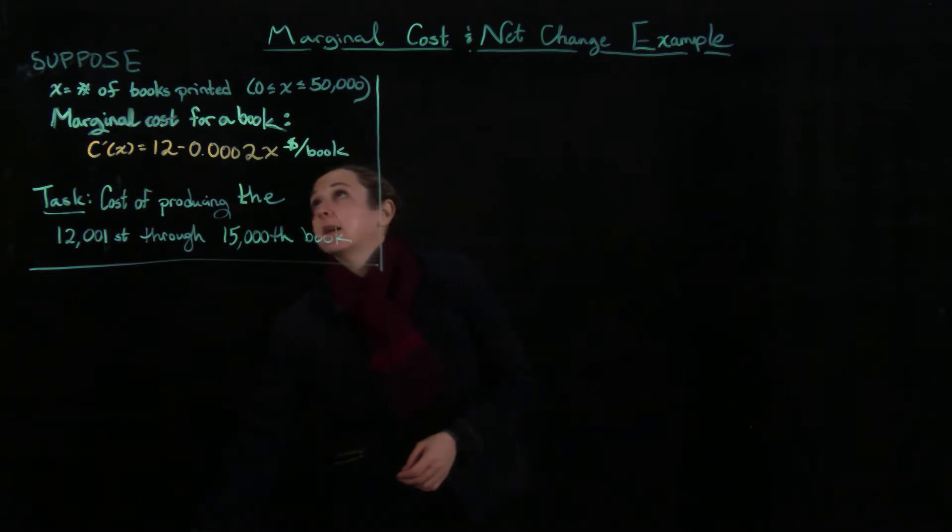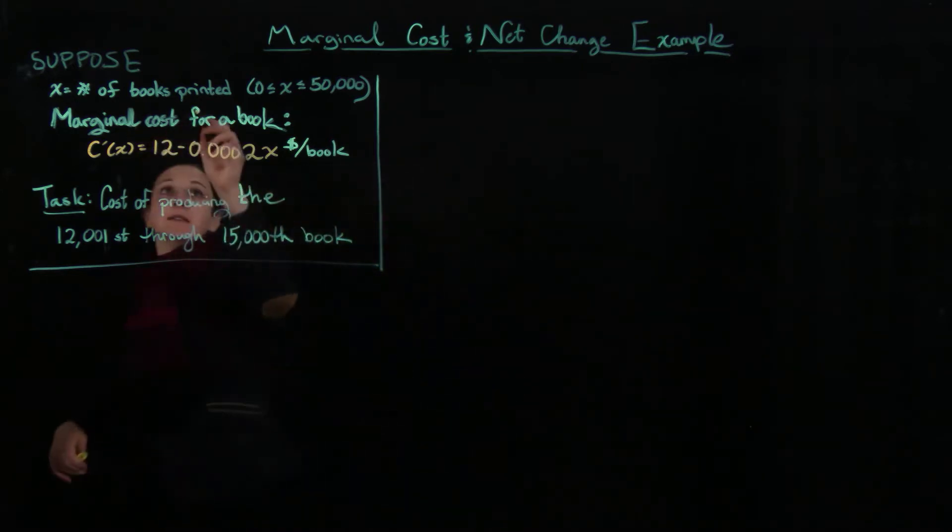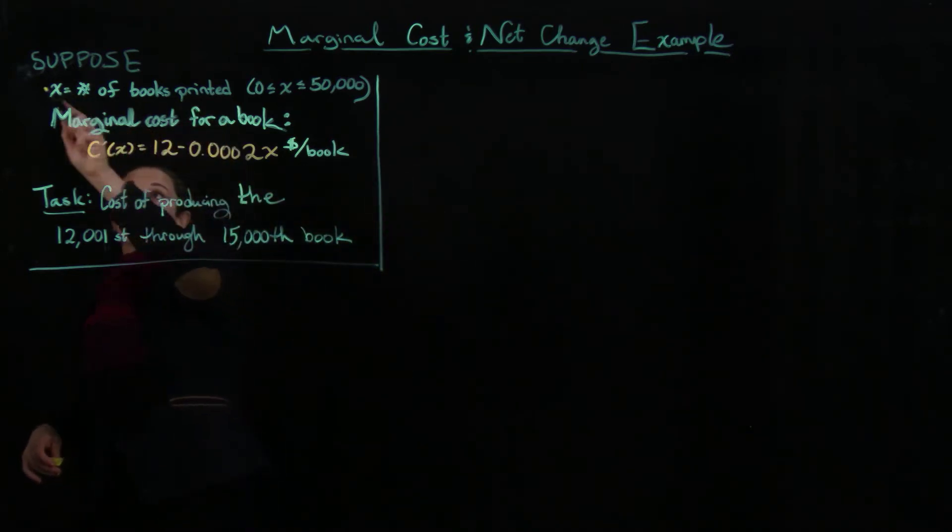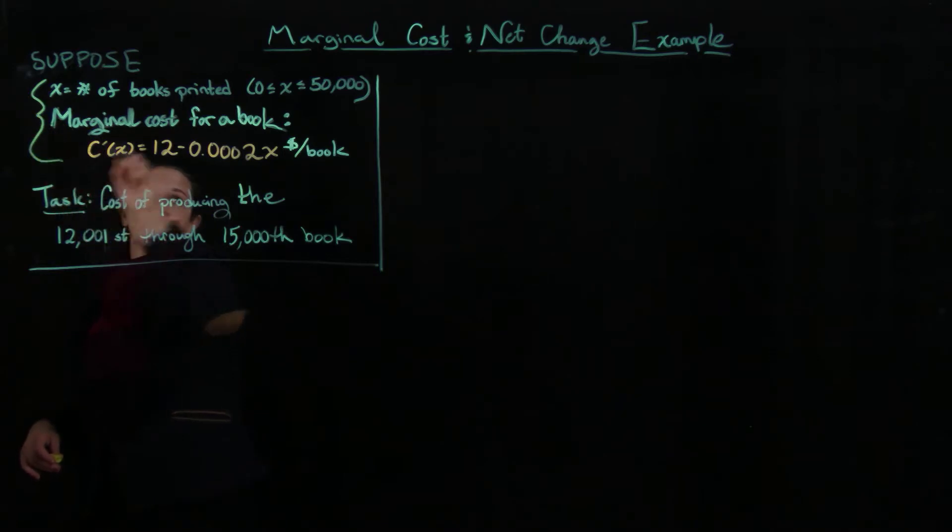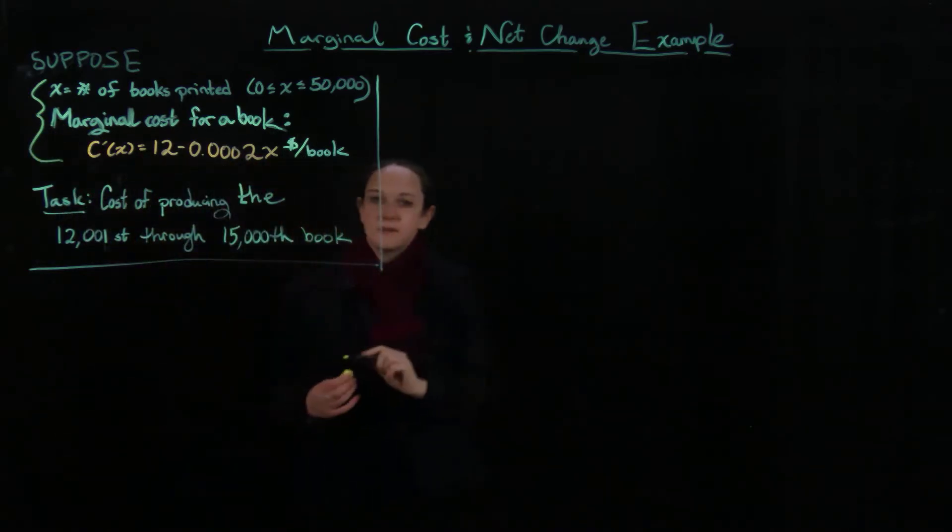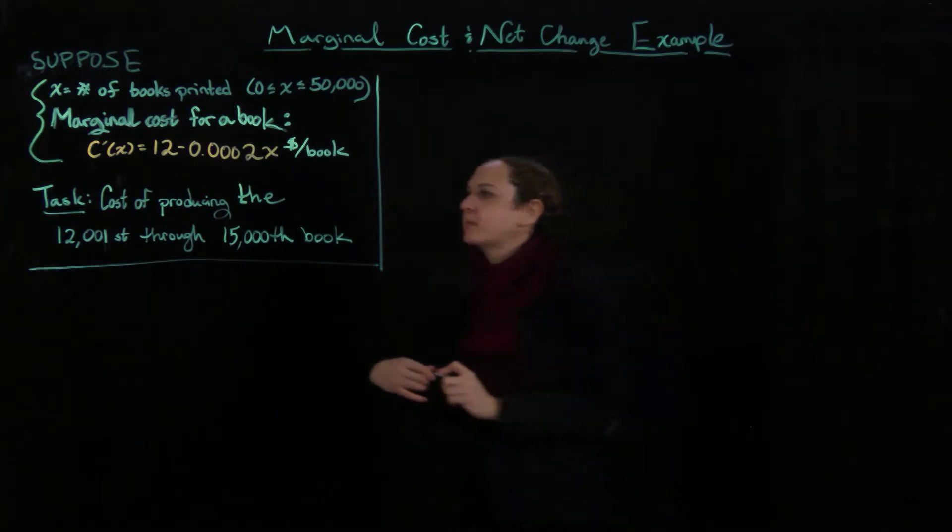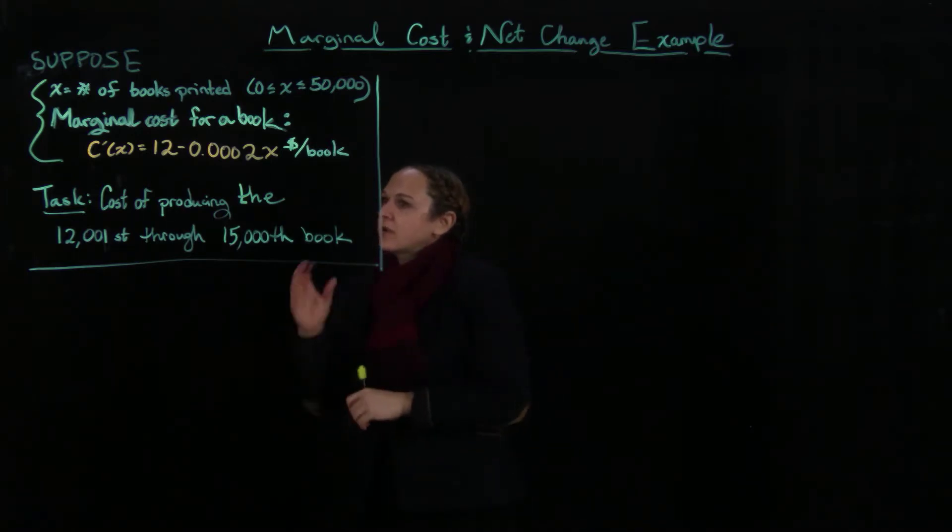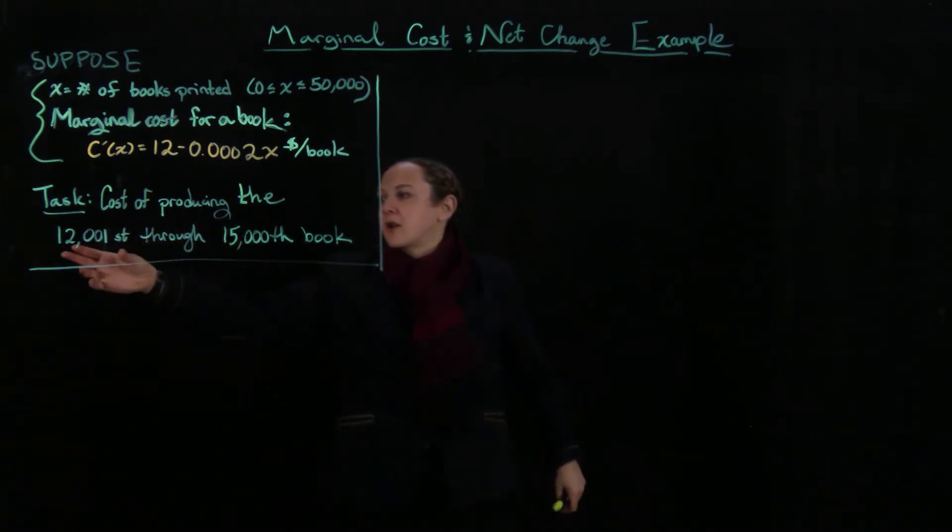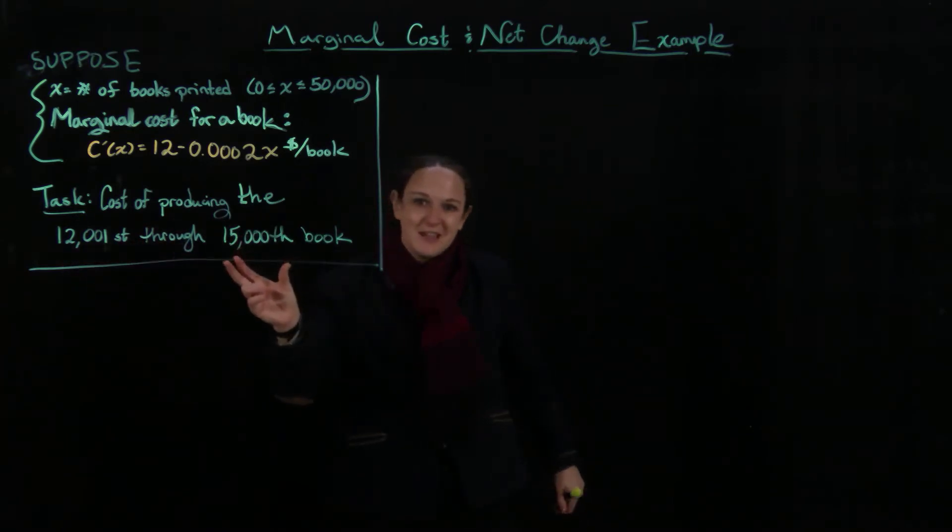We have that the number of books printed is going to be denoted by x. We have the marginal cost rate is the derivative of some function c, which is the cost. And I want to know the cost of producing the 12,000th through 15,000th book.